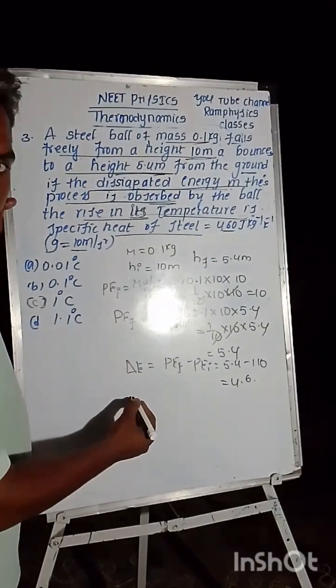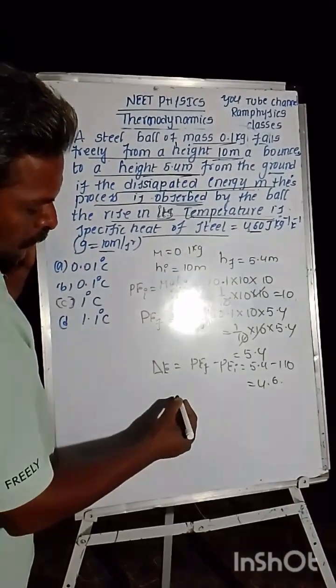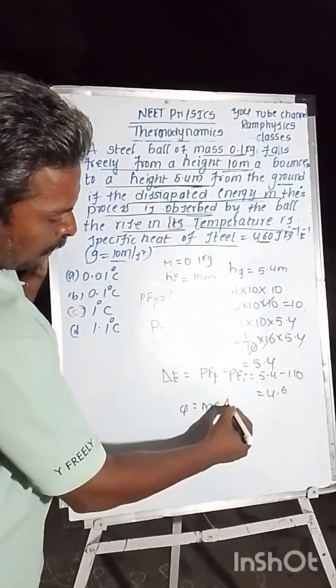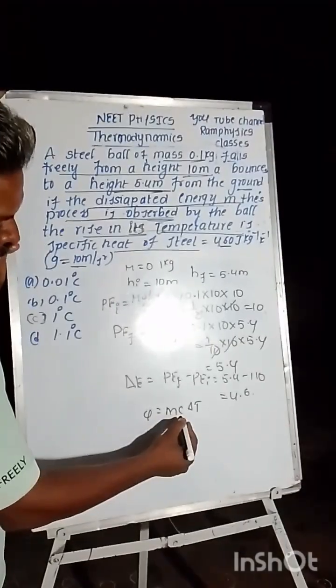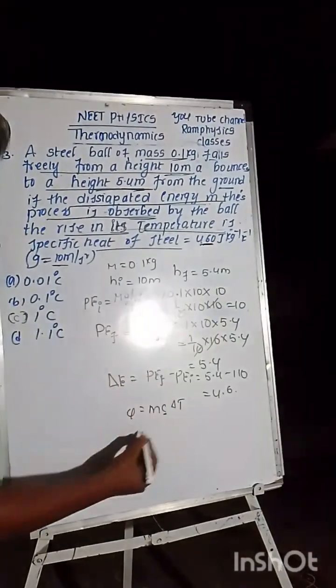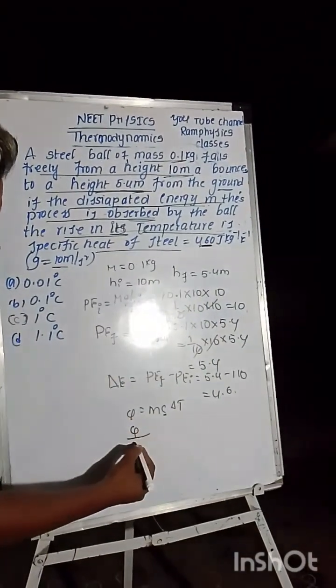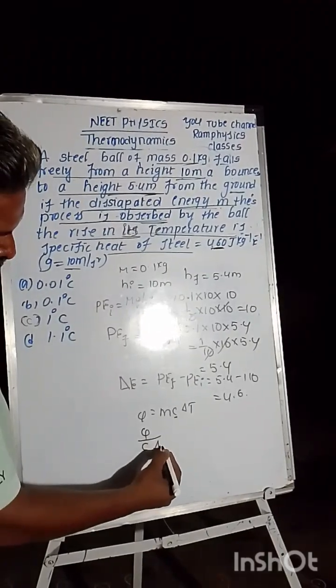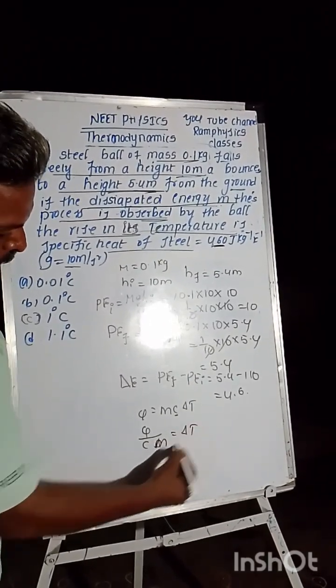At the same time, what we have to find is total amount of heat. That is Q is equal to mc delta T. Here specific heat is 460. So Q divided by c into m, that is equal to delta T.